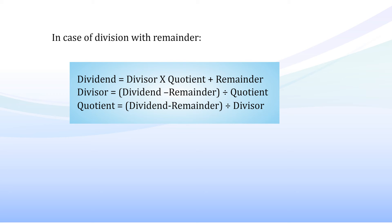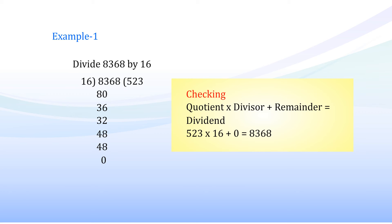Example 1: Divide 8,368 by 16. Solution: 8,368 ÷ 16 = 523. Working shown step by step, finally we get remainder 0. Checking: Quotient × Divisor + Remainder = Dividend → 523 × 16 + 0 = 8,368.